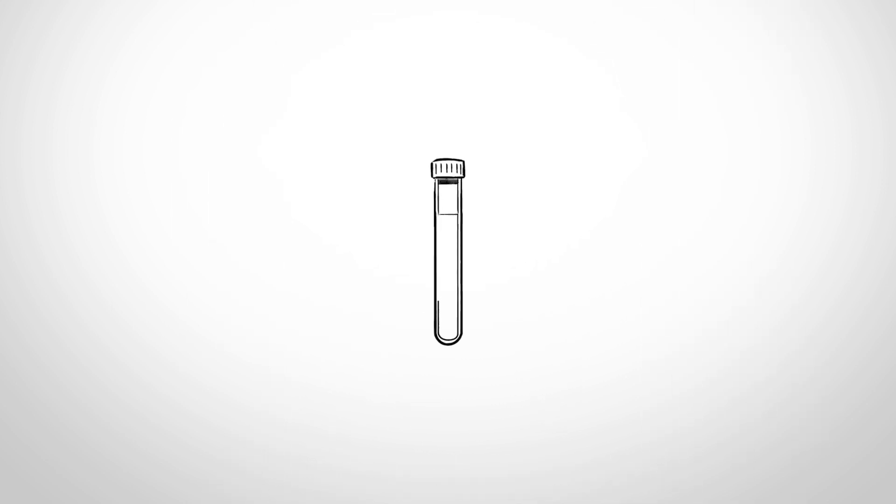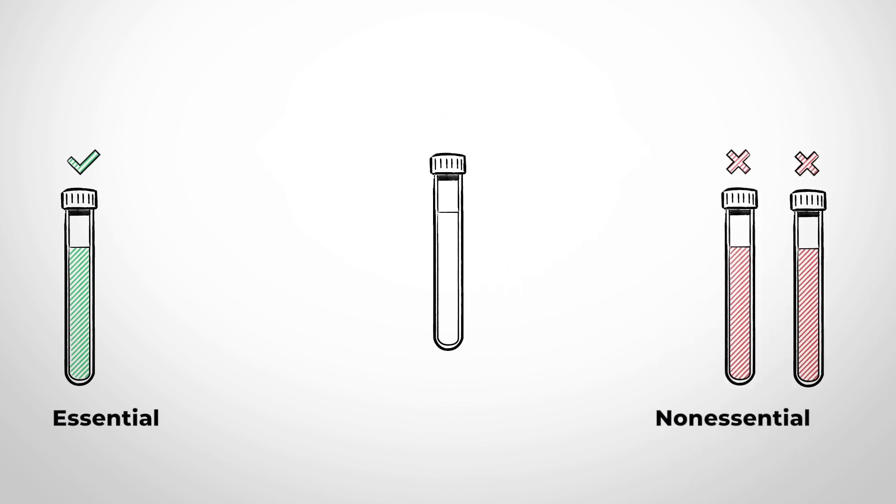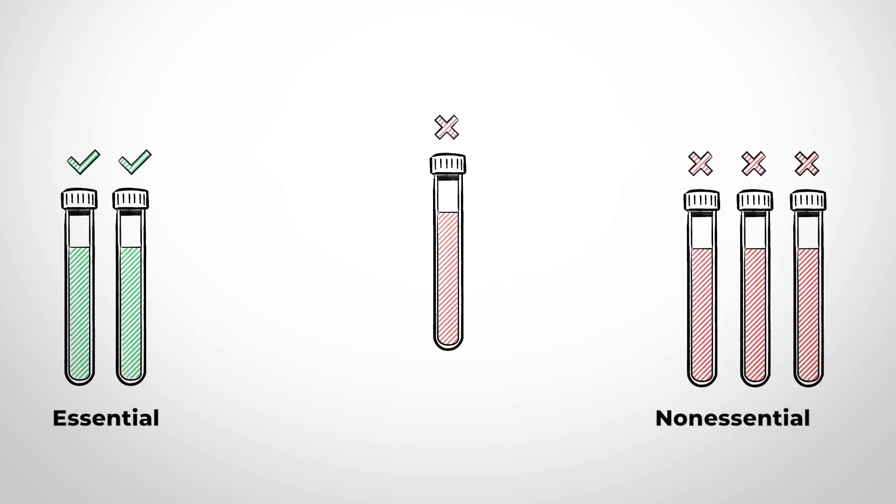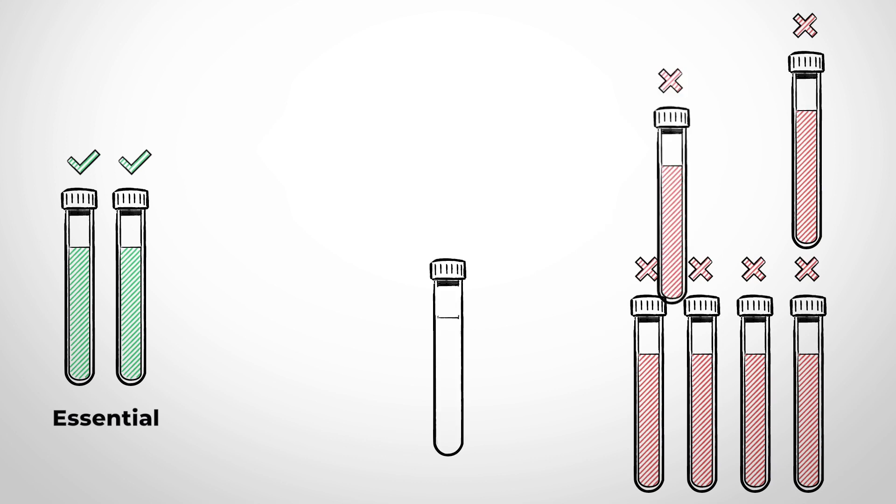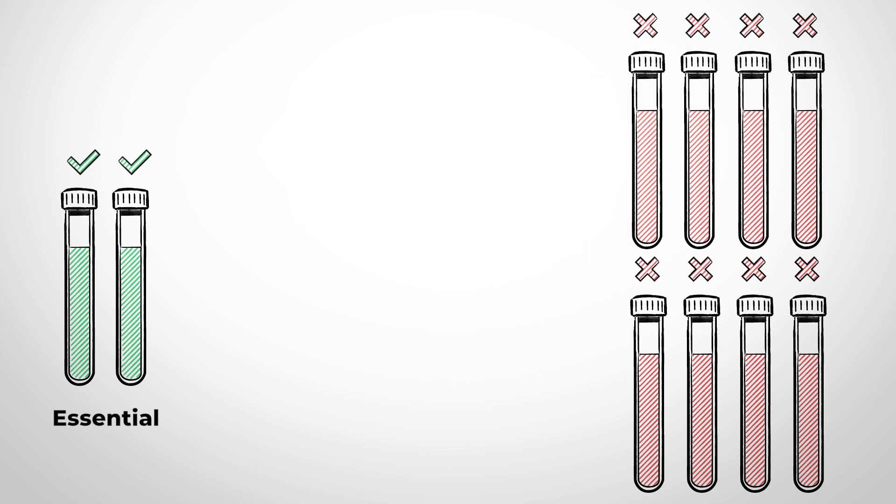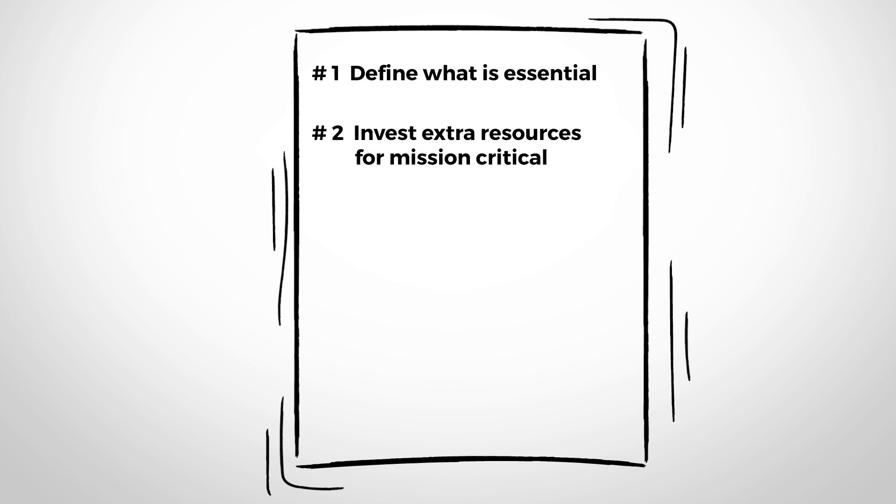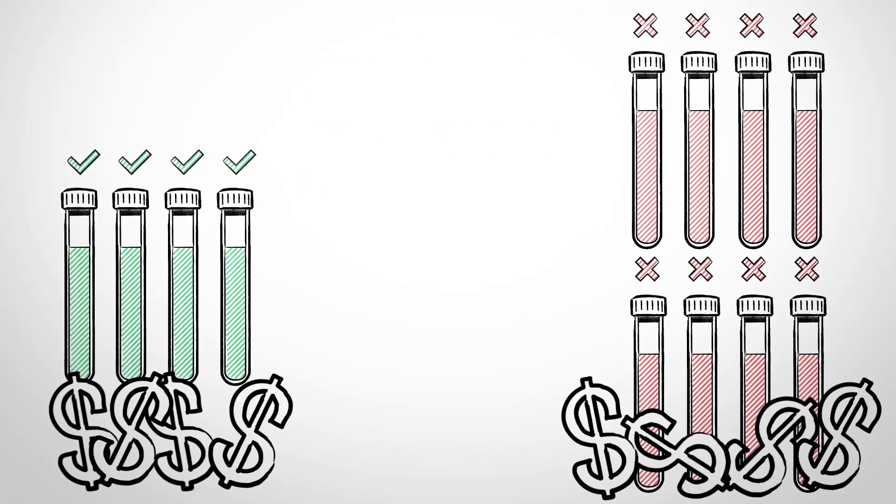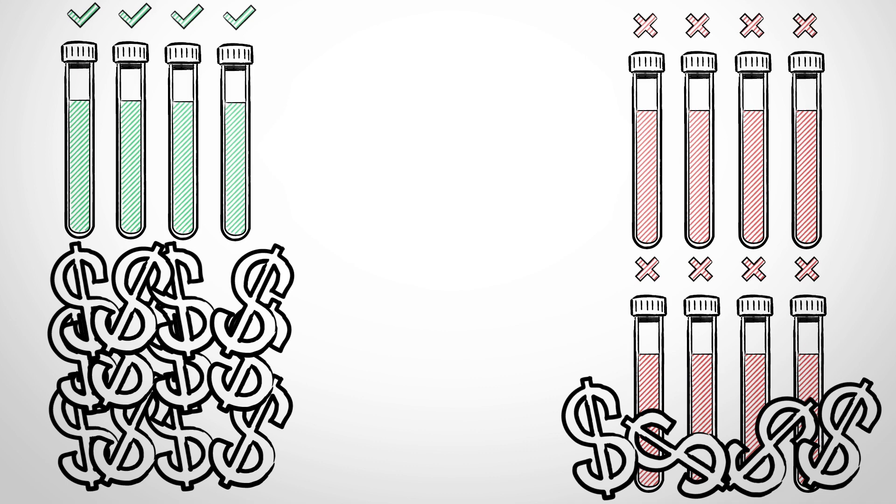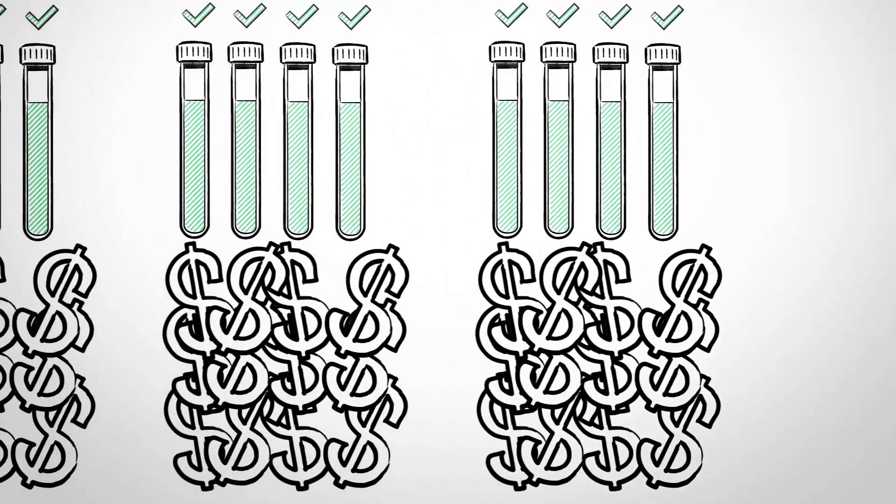A lab should plan and create a list of tests that it must perform under any circumstances, and a separate list of tests that can be suspended or sent out. This list may prove to be a beneficial guide for allocation of resources during a crisis. For essential testing services, the laboratory can allocate disproportionately more resources and maintain a more extensive buffer stock.